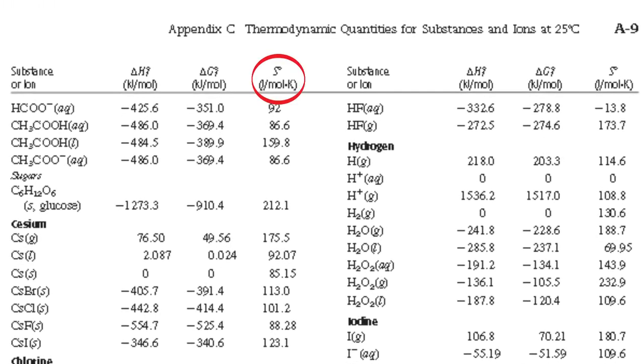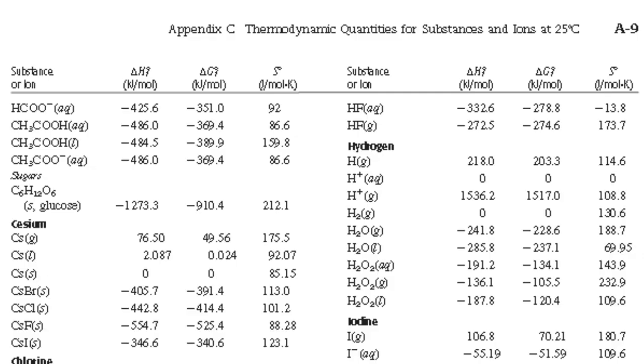The symbol for entropy is a capital letter S, and it has units of joules over kelvins times moles. Notice that, unlike the enthalpy, the units for entropy include kelvins. If you think about it, that makes sense. We know that the temperature has a big effect on the entropy. The higher the temperature, the more disordered a system becomes. So the temperature affects the entropy quite a lot.